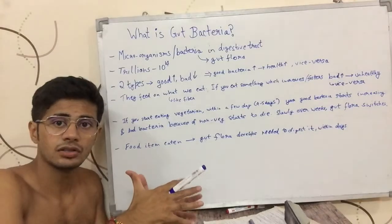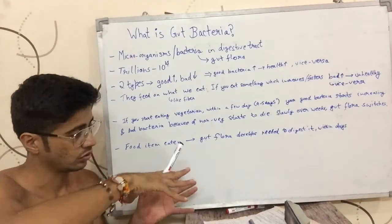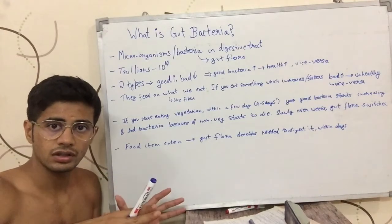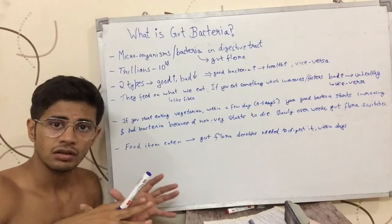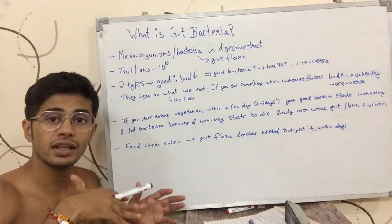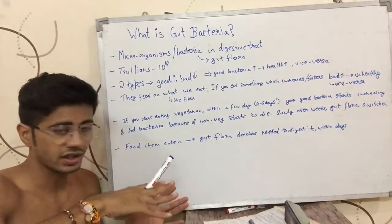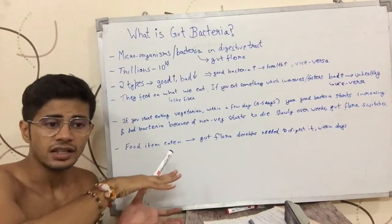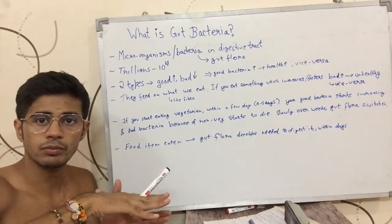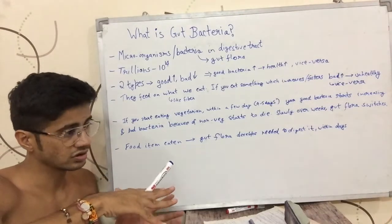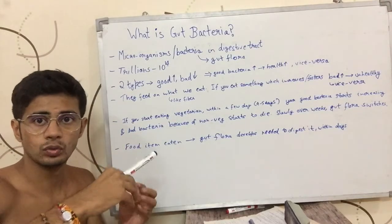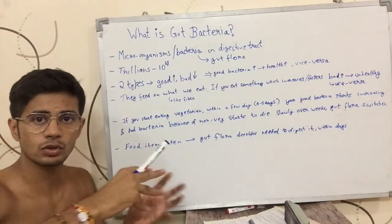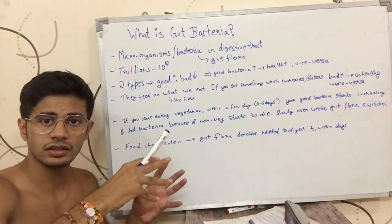The bad bacteria that were present because you were eating non-veg start to die and your health improves. When you were eating non-veg, your gut had more of the bad bacteria and less of the good bacteria. When you started eating vegetarian, the bad bacteria surviving on meat and eggs started to die, and the good bacteria started to flourish because they got what they needed — a vegetarian diet. Your health started improving because it is closely linked to the bacteria present in your gut.